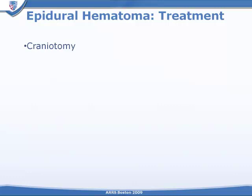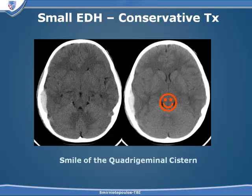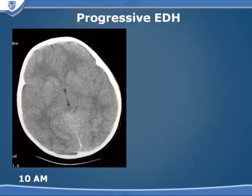The treatment of epidural hematoma involves a craniotomy, draining the blood clot, and identifying the artery that is the source of the bleeding. If the artery is not repaired, there is no reason to think the epidural hematoma would not reaccumulate. Not every epidural hematoma requires emergent surgical evacuation. This epidural hematoma is not causing significant midline shift or herniation — we can identify that because we can still see the smile of the quadrigeminal plate cistern. If we see CSF behind the brainstem in the QP cistern and anterior to the brainstem in the supracellar cistern, we may not have a situation requiring emergent neurosurgical therapy.